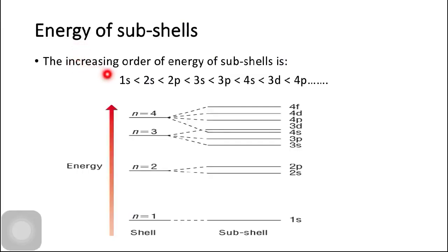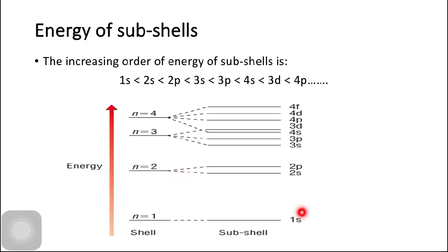The increasing order of energy of sub-shells belonging to different shells is: 1S, 2S, 2P, 3S, 3P, 4S, 3D, 4P, and so on. This energy diagram shows an arrow indicating the increasing order of energy. The 1S sub-shell has the lowest energy, while 4F has the highest. Comparing 1S with 2S, 1S has lower energy. Comparing 2P with 3S, 2P has lower energy than 3S.